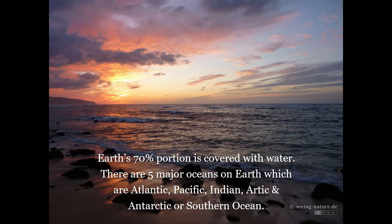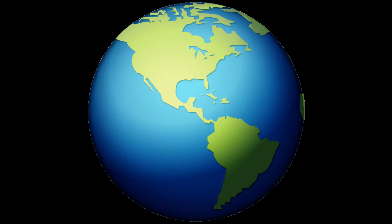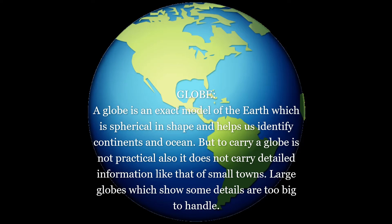Large globes that show some details are too big to handle. Maps are drawings or representations of a part or the whole of the Earth on a flat surface. We get different maps like the map of India or a map of a particular state, which present information and characteristics about the world like mountains, plains, and other relief features. We can identify the location and shapes of countries and also get an idea of the distance between places.